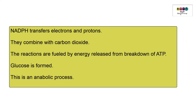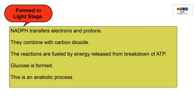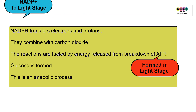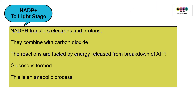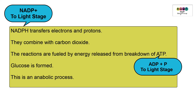To summarise in note form: NADPH transfers electrons and protons, which combine with carbon dioxide. These reactions are fueled by energy released from the breakdown of ATP, and eventually glucose is formed — making this an anabolic process. NADPH came from the light stage, as did ATP. After transfer and breakdown, NADP+ and ADP plus phosphate both return to the light stage.